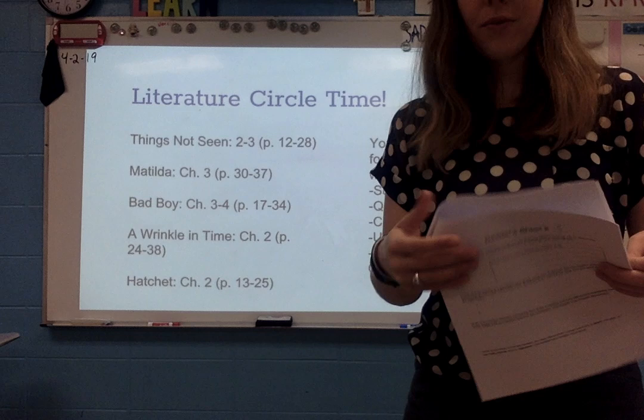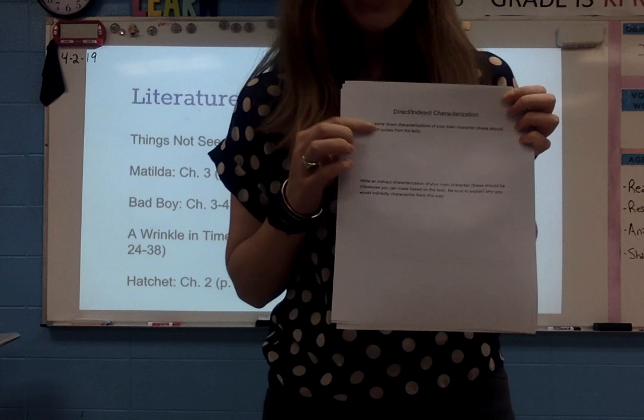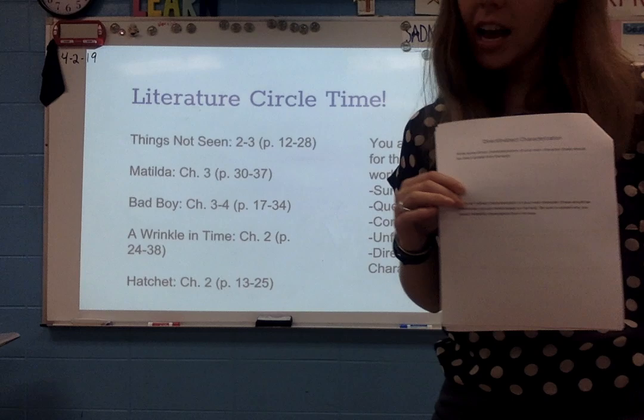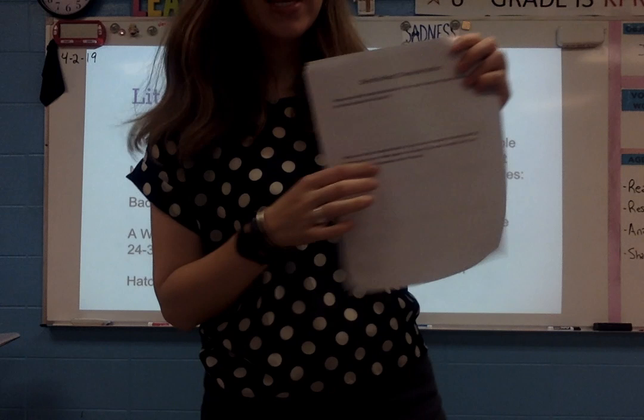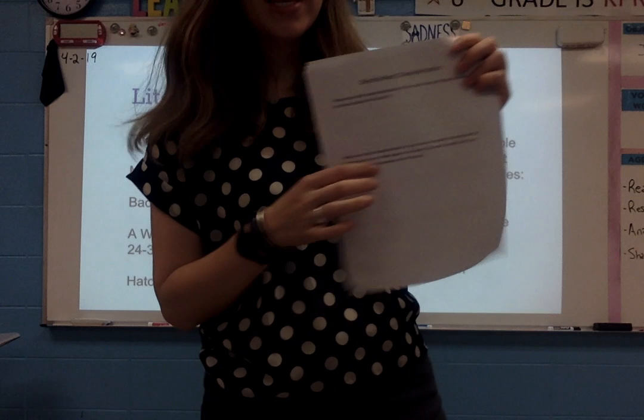So you're going to be working on your lit circles today. When you get to your reader's sheet for direct and indirect characterization on the back, take a look at it. It's asking you to give some direct characterizations about the characters in your book, so you're going to have to find a quote that tells me exactly how they're feeling or what's going on with them. And then down below, you're making indirect characterizations — maybe it doesn't come out and tell you that somebody is really angry or upset, but you could say you know they're upset and give a little explanation of what the evidence is that got you there. Good luck.